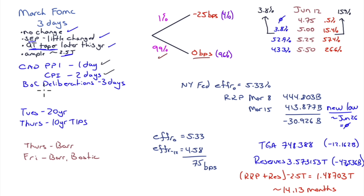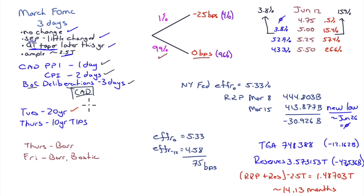Canadian PPI in one day, CPI in two days, and Bank of Canada deliberations in three days — like the Fed minutes but for the Bank of Canada. Lots of CAD risk in terms of the currency, and if you're in fixed income in Canada, some fixed income risk. In the US not much in auctions — a 20-year auction and the 10-year TIPS. Thursday you have Barr, same with Friday, and Friday you have Bostic; if anyone's going to move the markets it's probably Bostic.